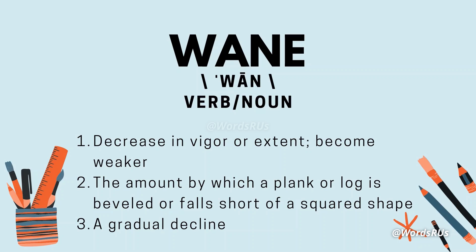As a verb, the word wane means to decrease in vigour or extent, or become weaker. As a noun, the word wane means the amount by which a plank or log is beveled or falls short of a squared shape, and third, a gradual decline.